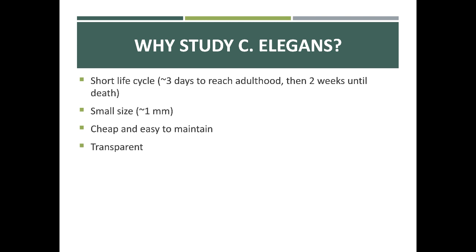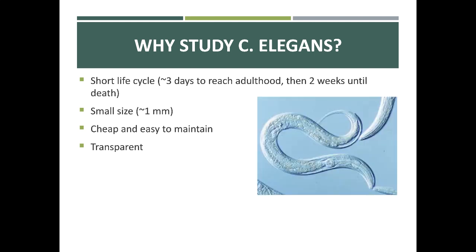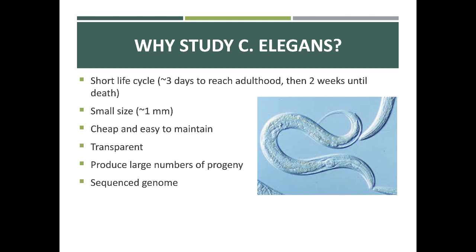C. elegans is transparent — one can see through it under the microscope, making it easier to study internal organs. They produce a large number of progeny, which is incredibly important. Organisms like C. elegans, fruit flies, yeast, bacteria, or Arabidopsis are ideal model organisms to study genetics because if you're studying a genetic phenomenon and they're only producing two progeny per generation, that doesn't allow you to calculate proper probabilities — which is why elephants are not a good model organism. C. elegans also has a sequenced genome, which makes studying its genetics much easier.